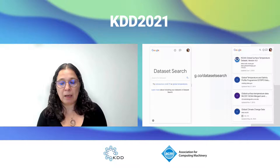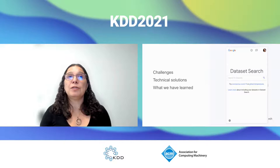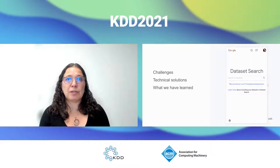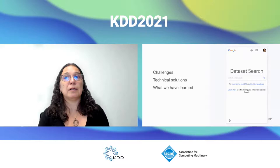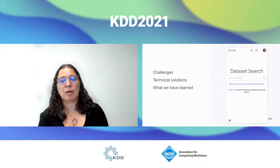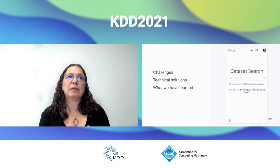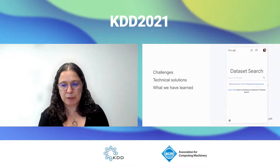I want to talk about the challenges of building something like that — challenges in the context of this open ecosystem for data sharing, not just in computer science but in any field, including government data, commercial data, and data from other sciences. I'll talk about the technical solutions we've adopted, point you to papers for further reading, and then circle back to how we can build together a better data sharing ecosystem, regardless of one specific product or tool.